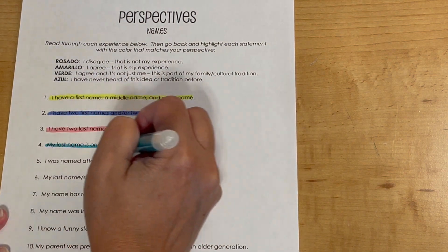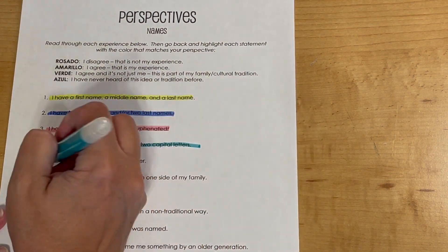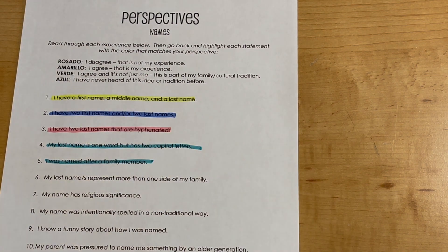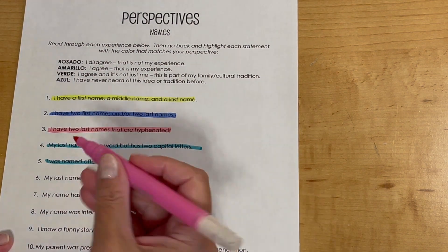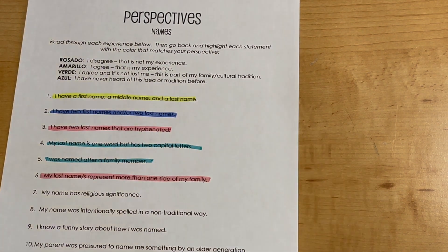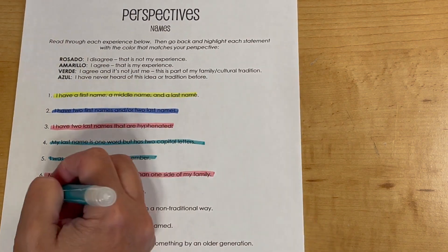Pink means 'I disagree, that is not my experience.' Yellow means 'I agree, that is my experience.' Green means 'Not only is that my experience but I think that's part of my family's culture.' And blue means 'I've never even heard of this before.'